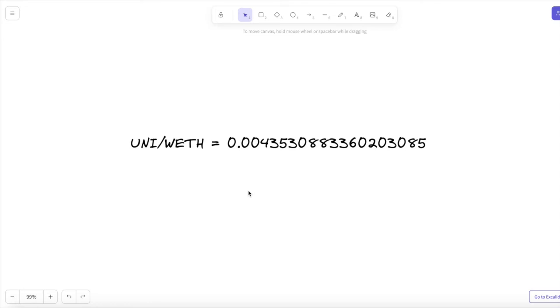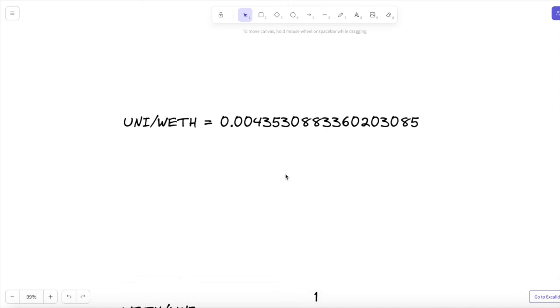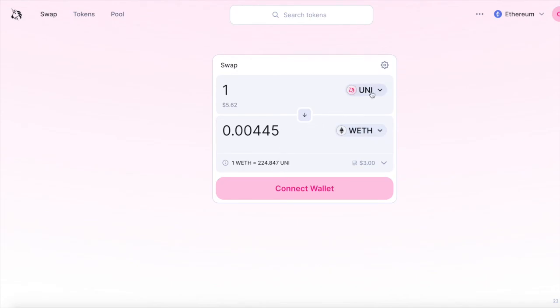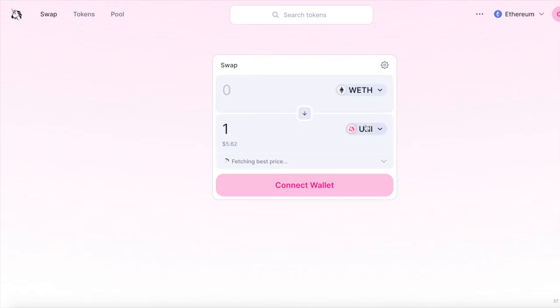And if we want to define the ratio from wrapped ether to Uniswap the other way, it's as simple as inverting it, taking one over that ratio value. So the ratio from wrapped ether to the Uniswap token is 229.72. Let's compare this to the app.